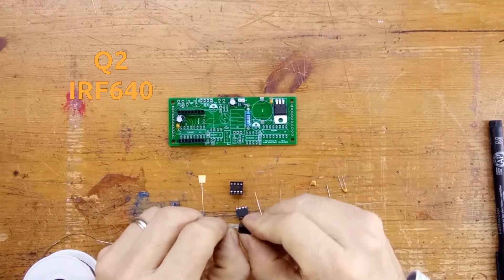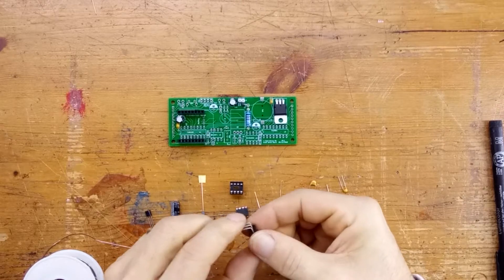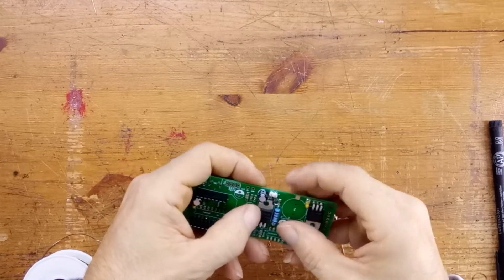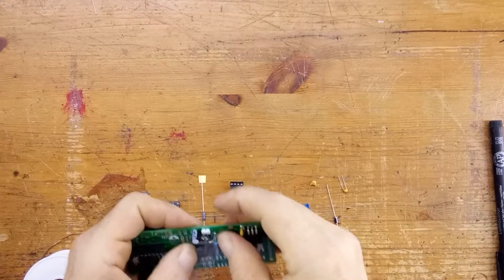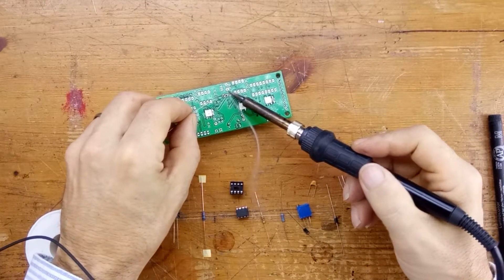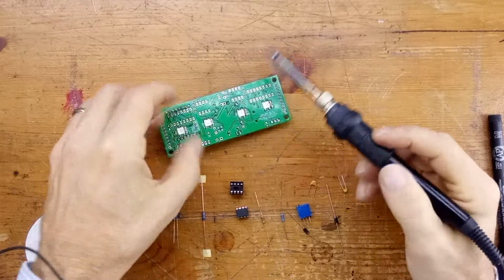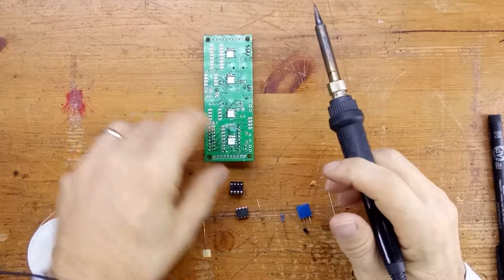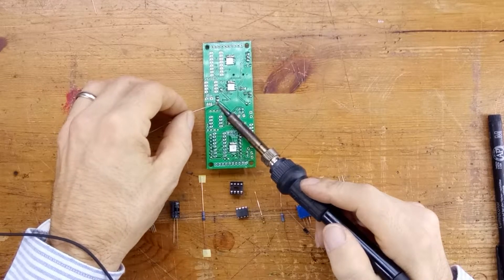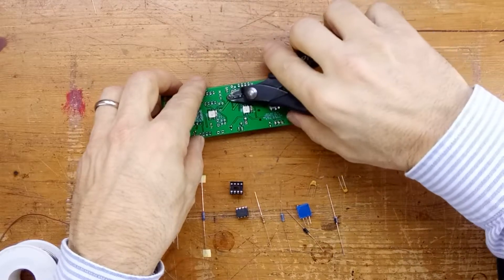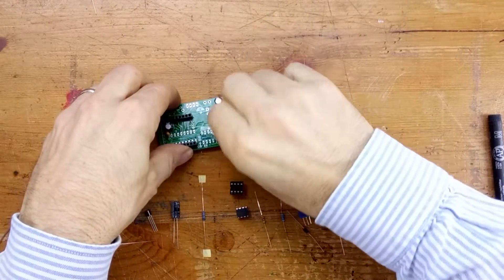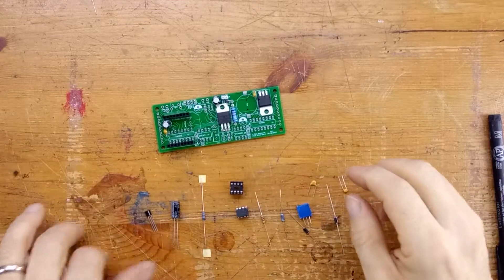Next we're going to put in the IRF640, that's Q2. We bend the leads over so that they're at a right angle, and we place it into the board with the metal tab side facing towards the board. We're going to tape it in place because otherwise it will fall out, and then solder the three junctions. Looks fine. Solder the other two junctions, trim up, get rid of the tape and we're ready for the next piece.